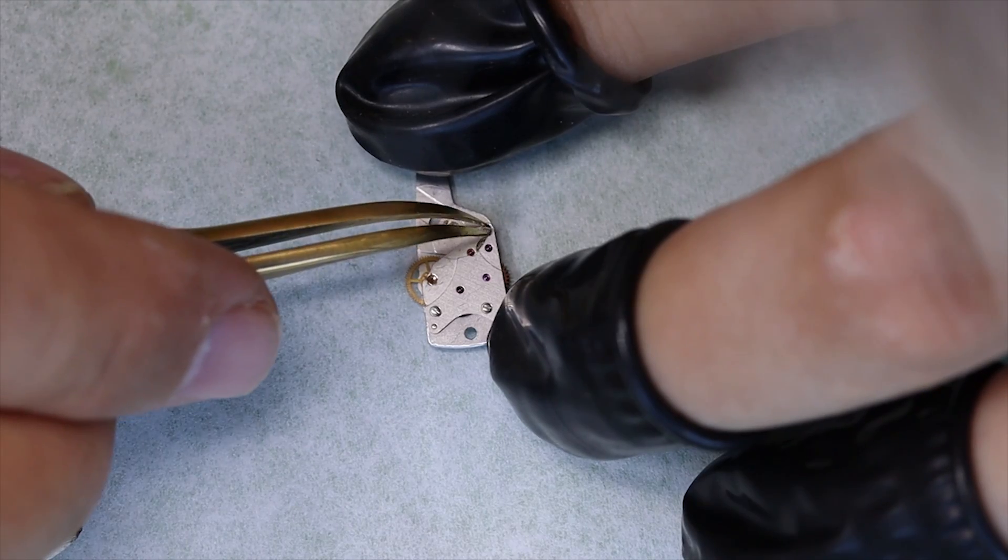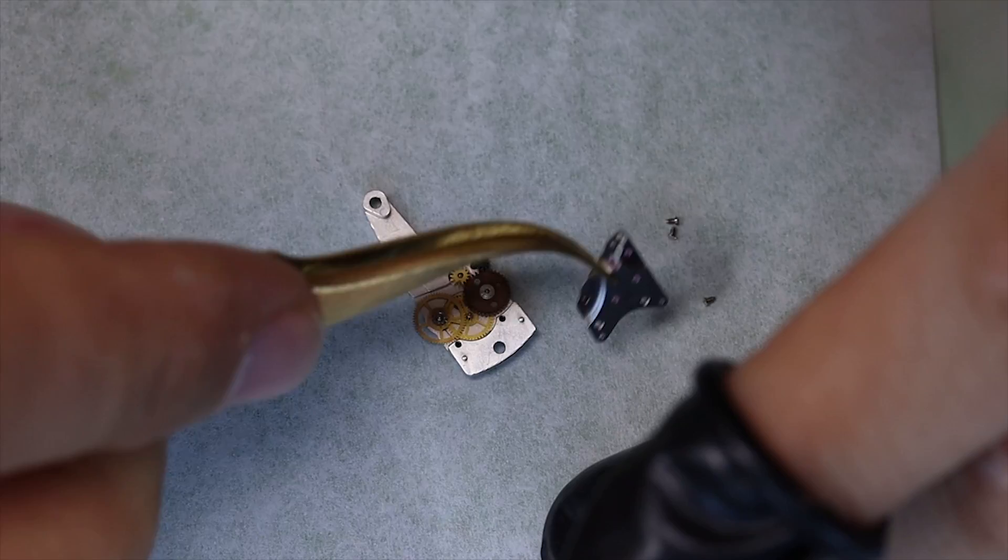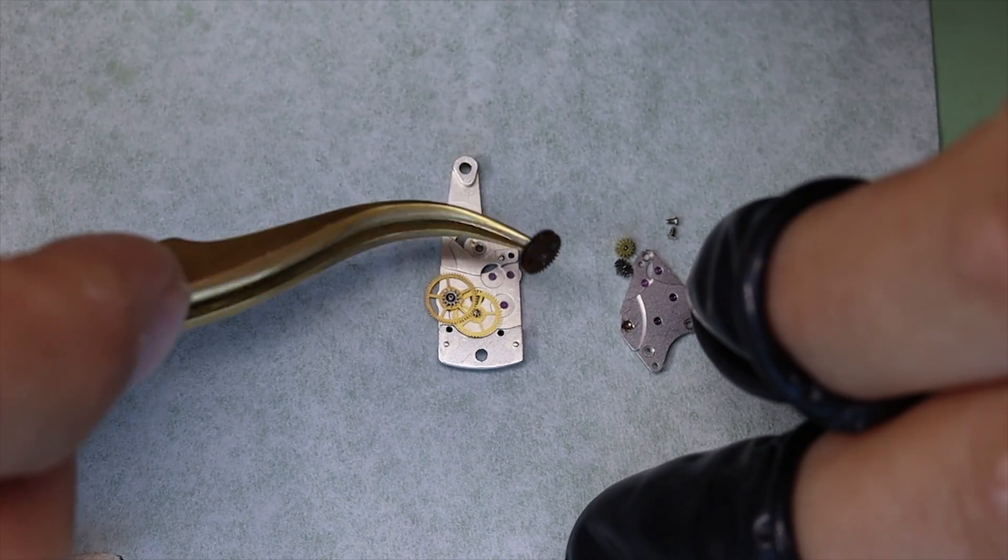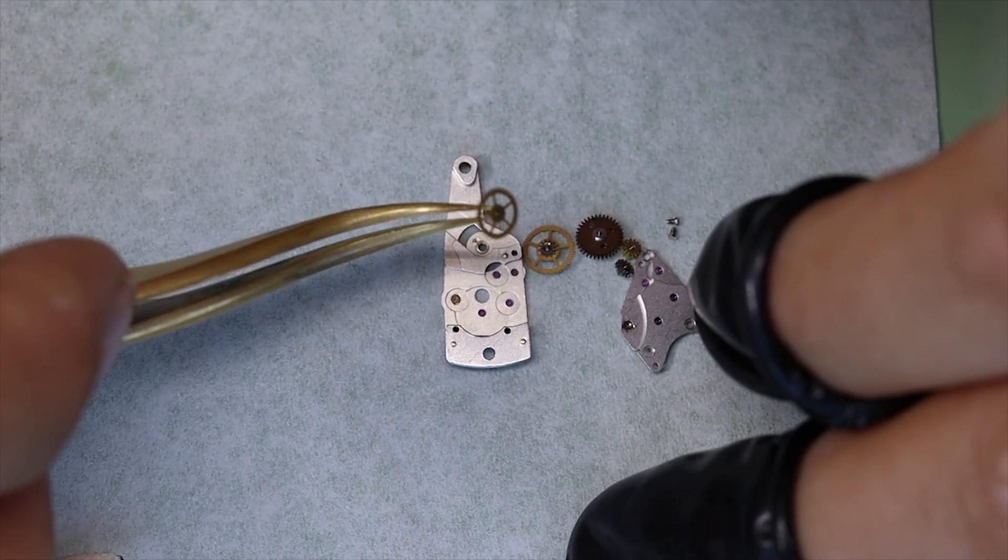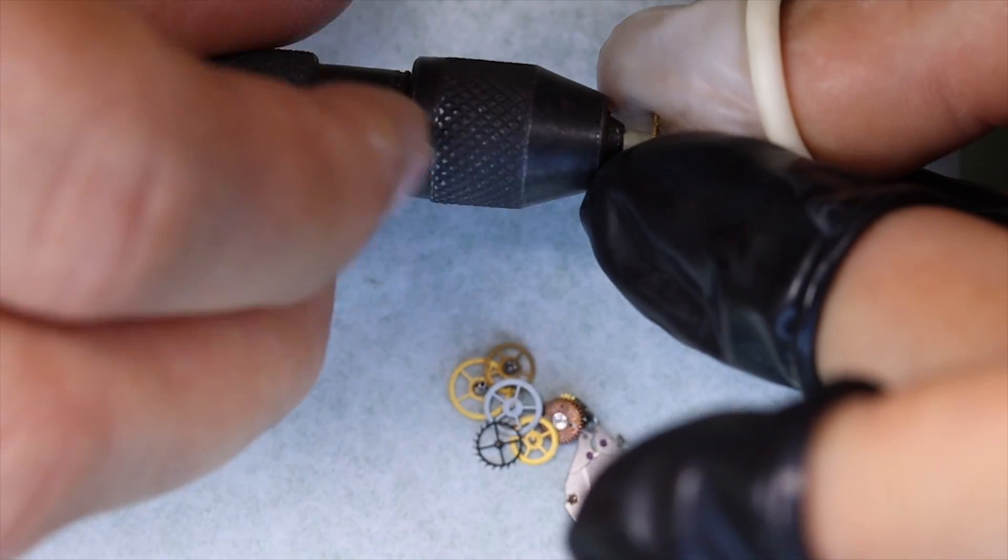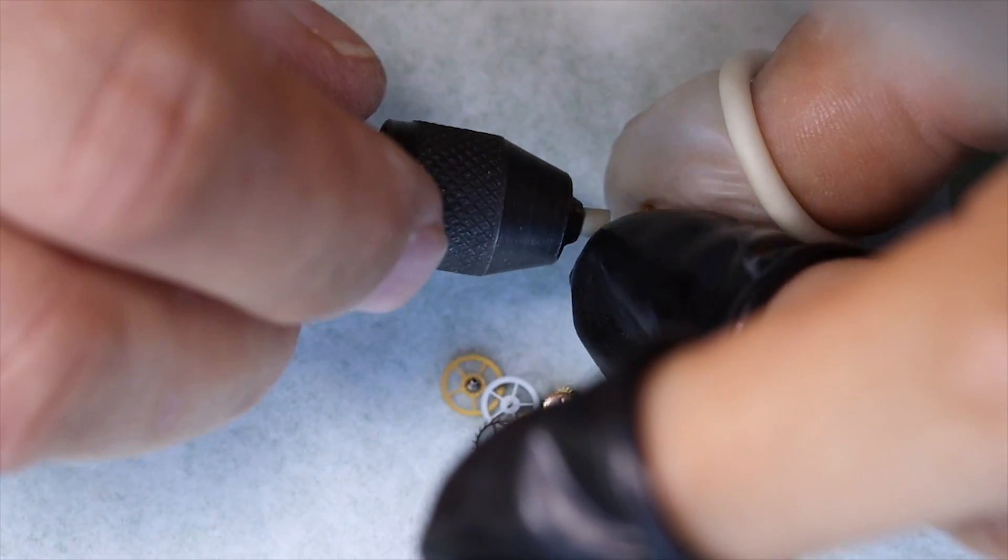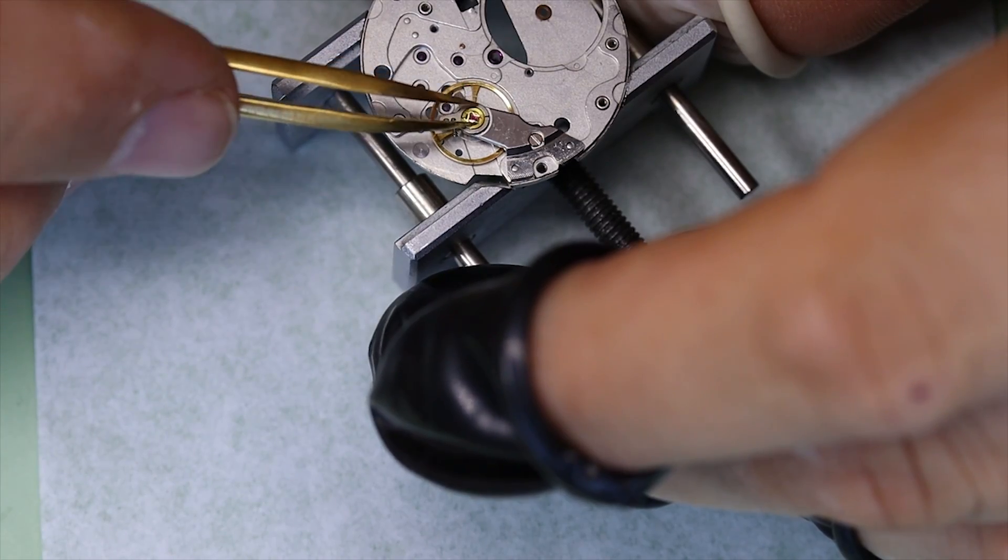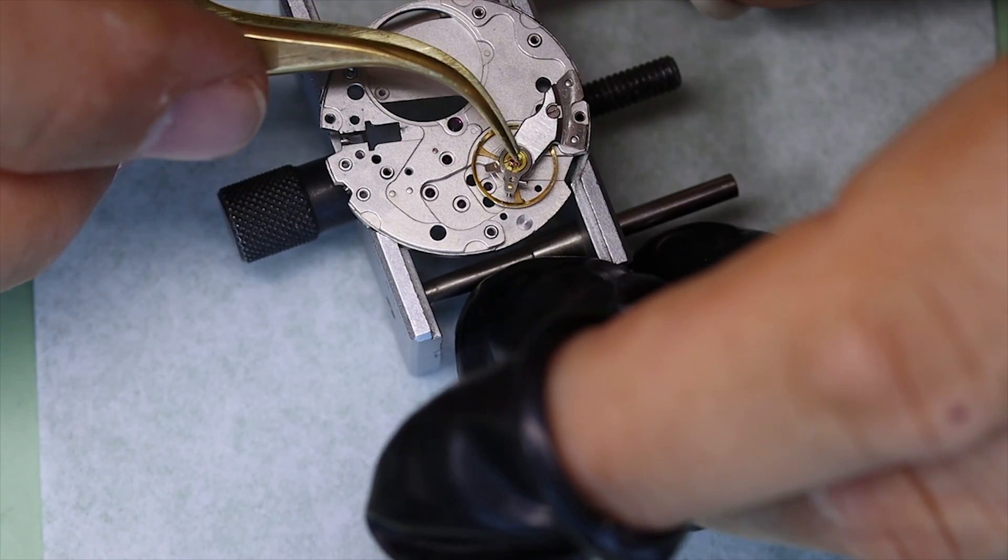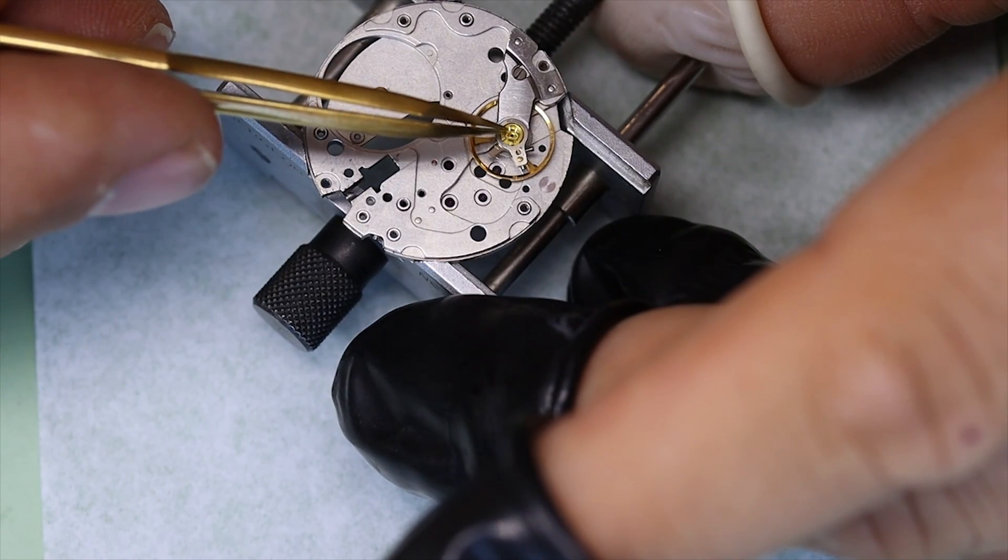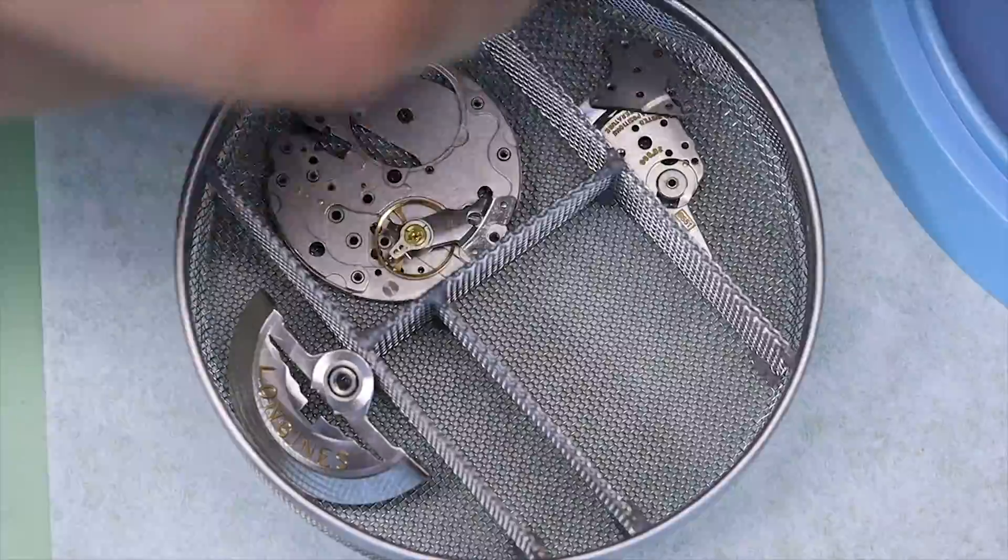For the automatic bridge it's very similar to the Omega 550 series actually, kind of the same concept. A few more jewels but anyway we're going to clean the pivots as well using this e-flex stick. It's not polishing the pivots but it's cleaning them nicely. Then we're going to balance back on the main plate, we can take out the last jewel and get everything ready for the lazy cleaning machine.